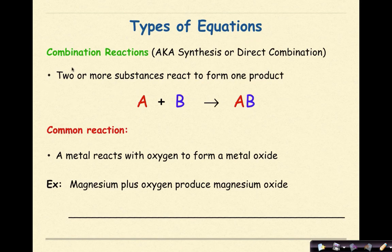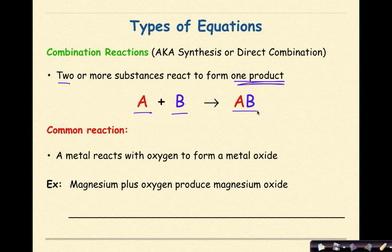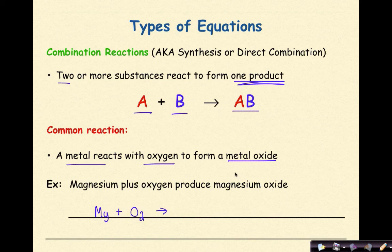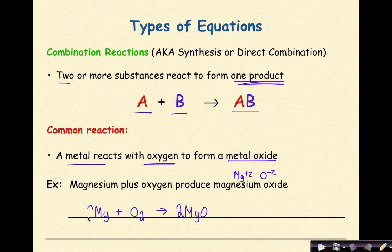Let's look at different types of equations. The first is the combination reaction, also known as synthesis or direct combination depending on your textbook. This is where 2 or more substances react to form one product — symbolically A plus B yields AB. A common example is a metal reacting with oxygen to form a metal oxide: magnesium plus O2 produces magnesium oxide, MgO. Balancing: put a 2 in front of MgO and a 2 in front of Mg — 2 reactants, 1 product.